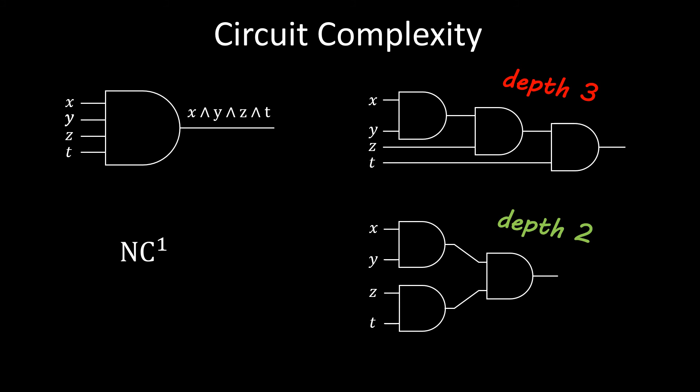In contrast, computing this conjunction is not in NC^0, for which the depth has to be constant, rather than logarithmic. Furthermore, there also exist NC^2, and so on, for circuits where the depth is allowed to grow as fast as the logarithm squared, or higher powers of the logarithm.